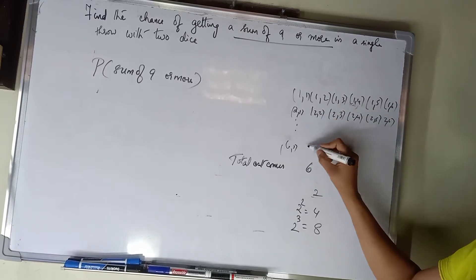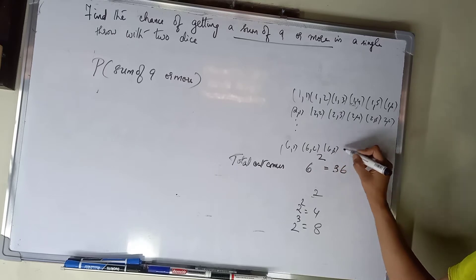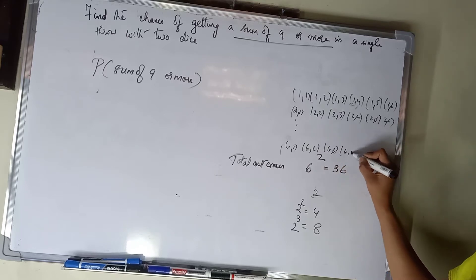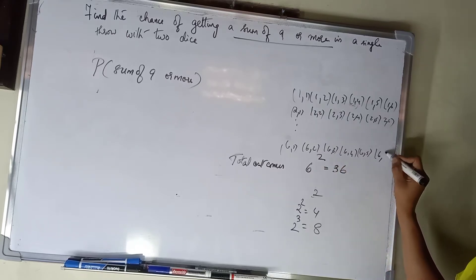Continuing to first die shows 6: (6,1), (6,2), (6,3), (6,4), (6,5), (6,6). This way we list all pairs.